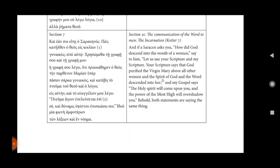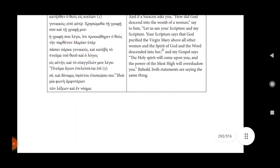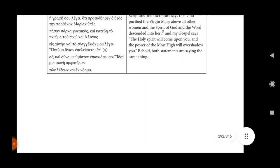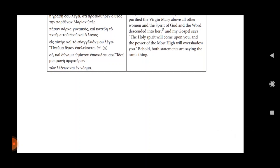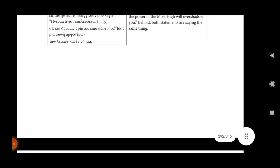Section 2c, The communication of the word to man, the incarnation. Quotex 6 and 7. And if a Saracen asks you, How did God descend into the womb of a woman? Say to him, Let us use your scripture and my scripture. Your scripture says that God purified the Virgin Mary above all other women, and the Spirit of God and the word of God descended into her. And my gospel says, The Holy Spirit will come upon you, and the power of the Most High will overshadow you. Behold, both statements are saying the same thing.